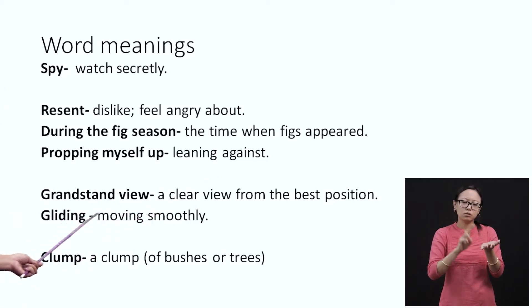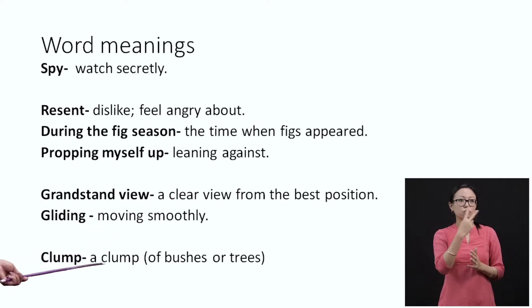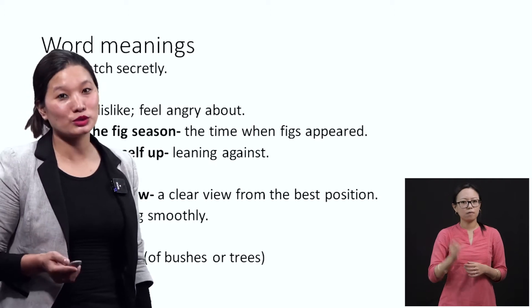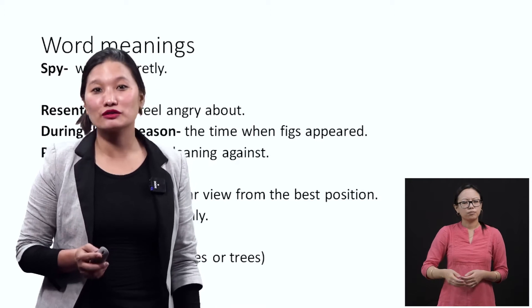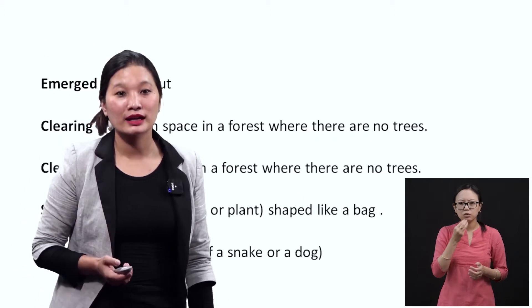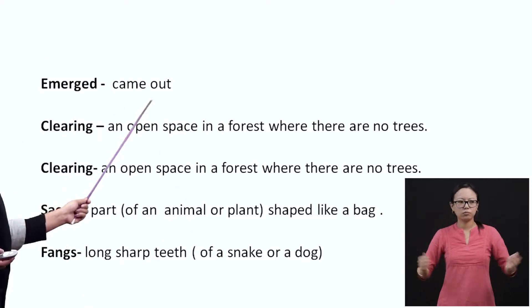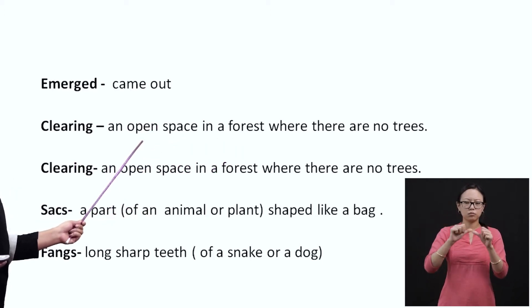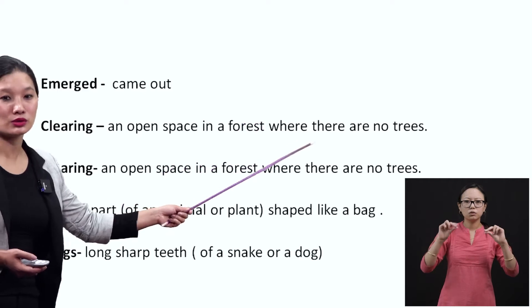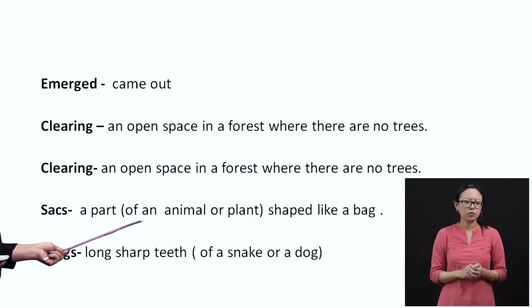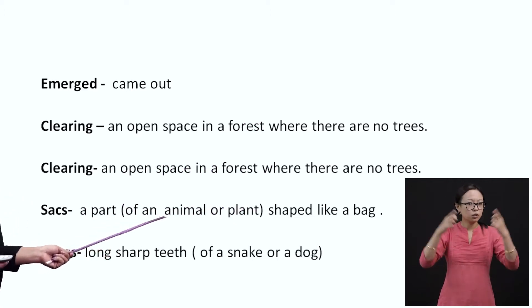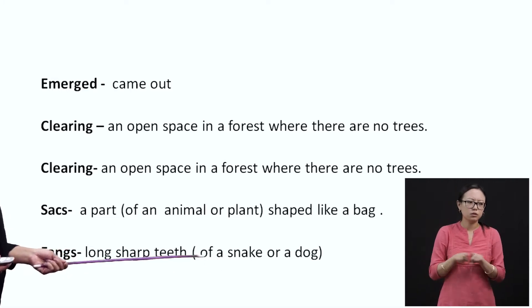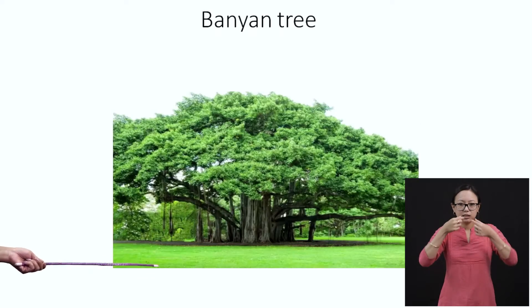Gliding — moving smoothly. Clump — a group of bushes or trees. Emerged — came out. Clearing — an open space in a forest where there are no trees. Sac — a part of an animal or plant shaped like a bag. Fangs — long sharp teeth of a snake or a dog.